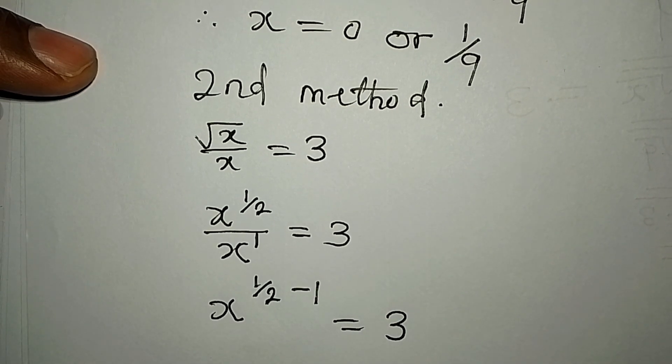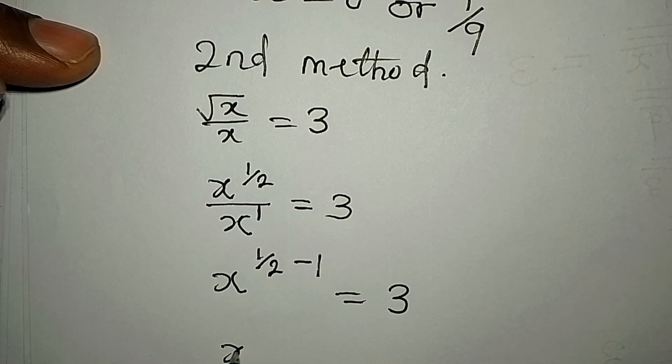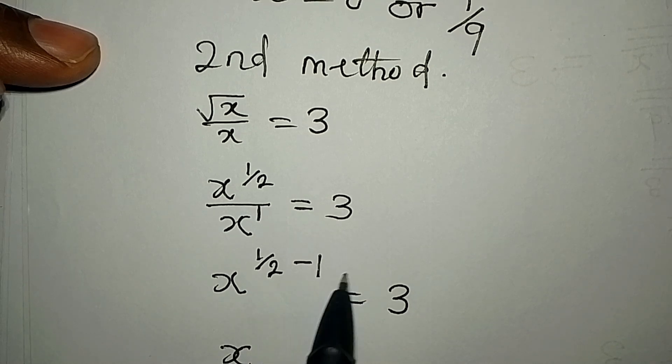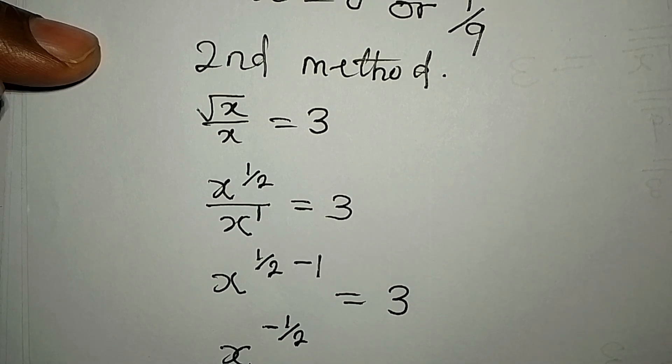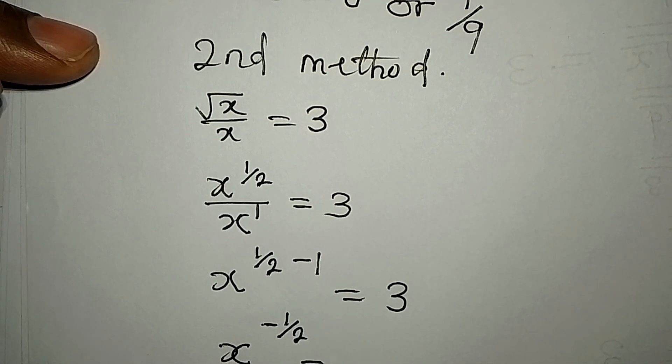From here, this is x to the power of one over two minus one, which is giving us negative one over two. So this is now equal to 3.